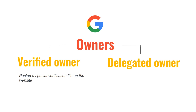A verified owner performs some action to verify ownership of the property — for example, posting a special verification file on the website, or Google could deduce ownership, for example, if the blogger account and Search Console account are the same Google account. A delegated owner was granted ownership rights by a verified owner but has never verified ownership. They can add users or other delegated owners. If the verified owner that granted owner rights becomes unverified, the delegated owner also loses access to the property. A delegated owner will be shown as an owner without any verification methods shown in their settings page.